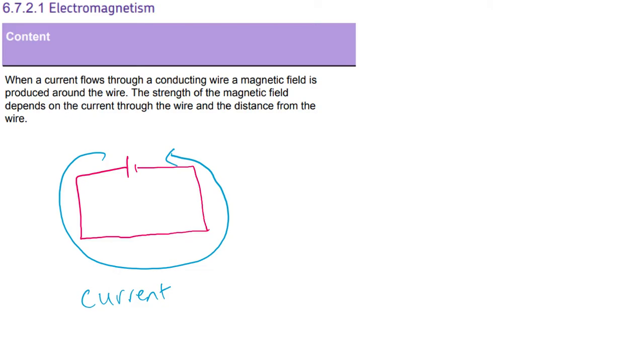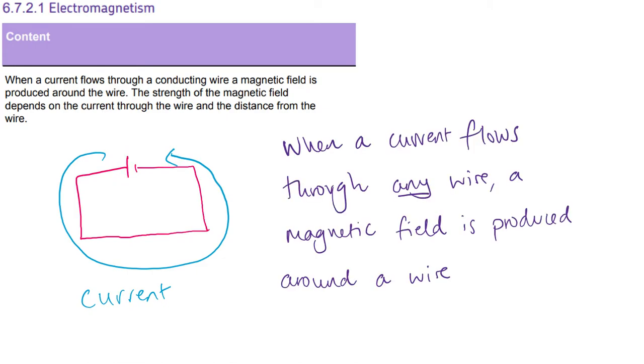So to remind us what we mean by current, well, it's the rate of flow of charge. So those little electrons that flow around the circuit, they go from the positive terminal around to the negative terminal. When a current flows through any wire, whether that be when we're in the house or around school, a magnetic field is produced around that wire.